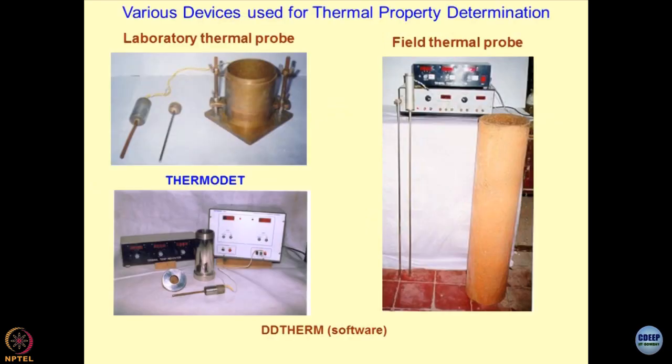In the process we also developed different types of devices which have been used for determination of thermal property, all in-house development. What you see here is the CBR mold or a proctor compaction mold and the thermal probe which was developed can be inserted into the compacted soil mass with the help of a dummy rod. The diameter of the dummy rod is slightly less than the diameter of the thermal probe to ensure minimum disturbance to the soil. This is the field thermal probe. This is the constant power supply setup which heats the nichrome wire, thermocouples readings are displayed on a temperature reader.